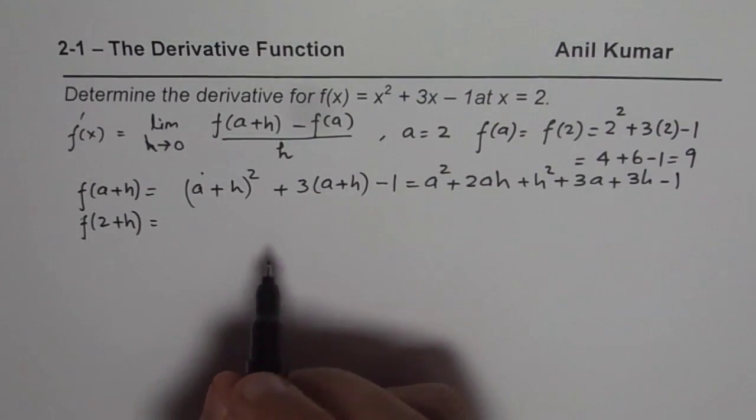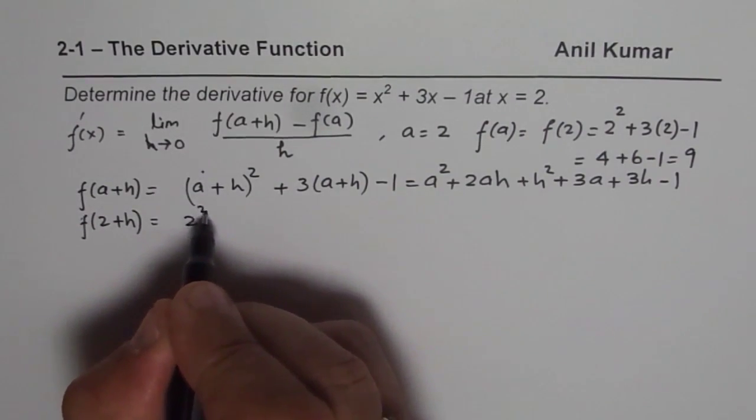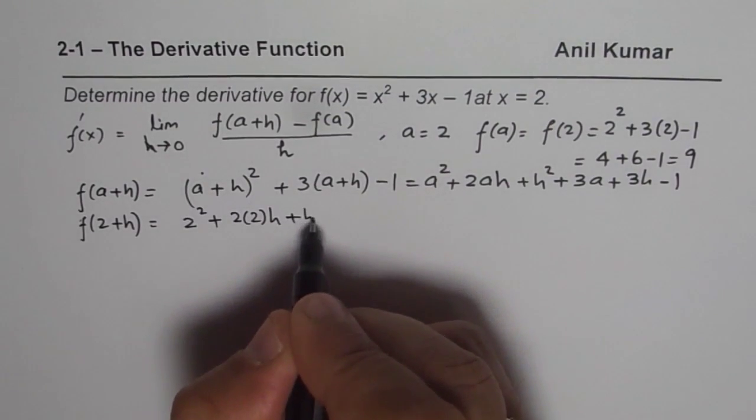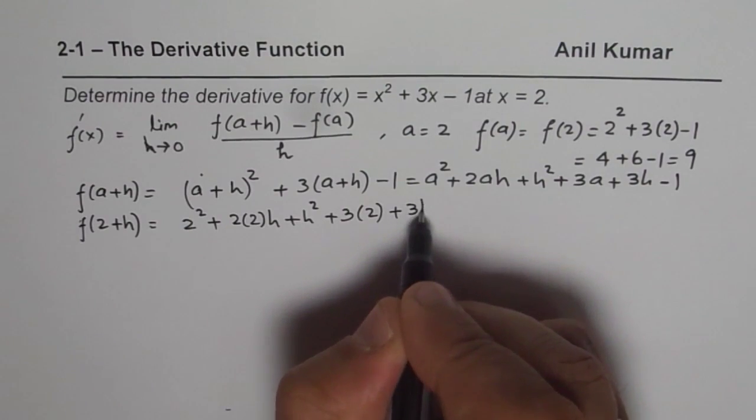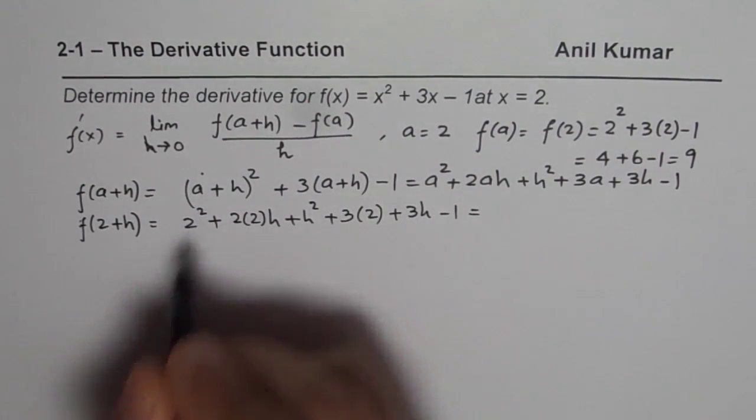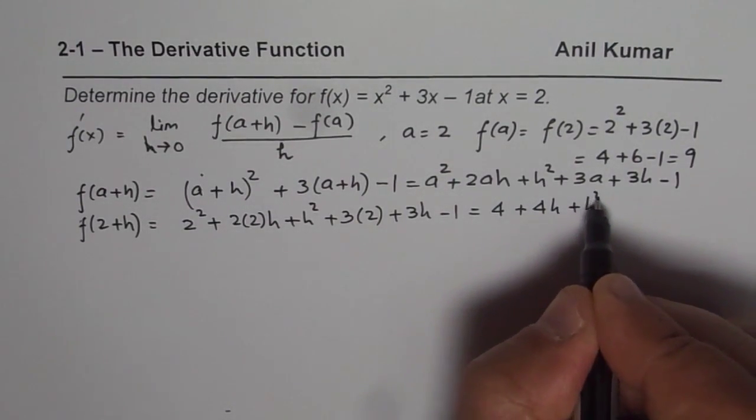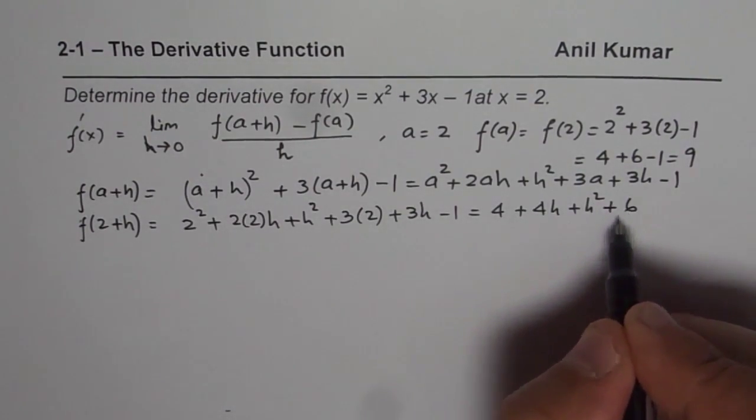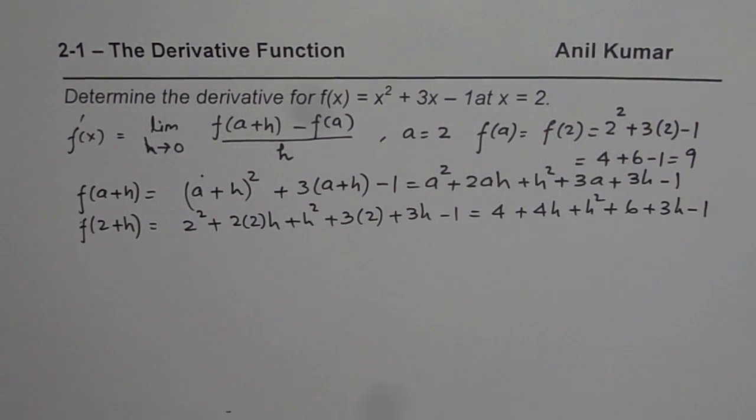So 2 plus h, I will replace a with 2 here, so what do we get? We get 2 square plus 2 times 2 times h plus h square plus 3 times 2 plus 3 times h minus 1. So 2 square is 4 plus 4 h plus h square, 3 times 2 is 6 plus 3 h minus 1. So that is what you get in this particular expression.